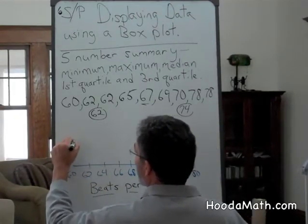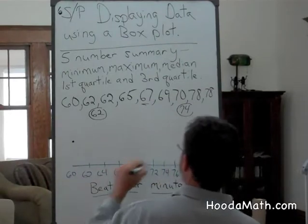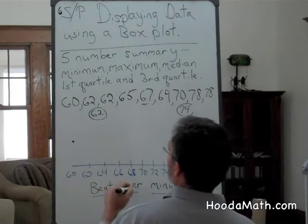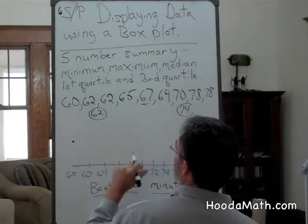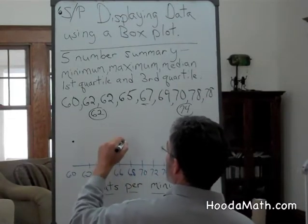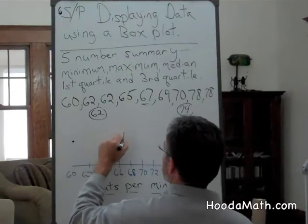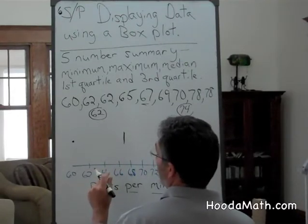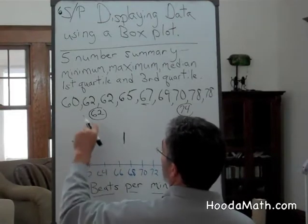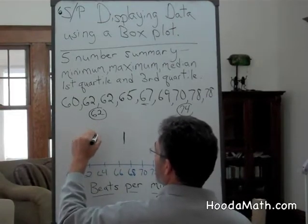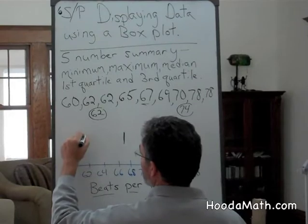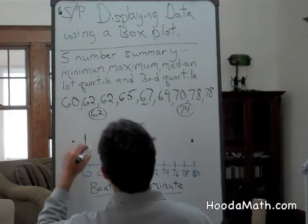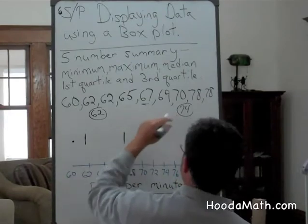So we put a dot for the minimum and a dot for the maximum. We make a vertical line, a small vertical line, for the median which is 67. Then we make a vertical line the same size for our first quartile, 62, and 74.